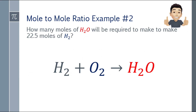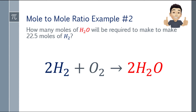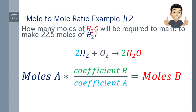Example 2: how many moles of water will be required to make 22.5 moles of H2? We have the equation H2 + O2 = H2O. Check if it's balanced — it is not, so we balance it: 2H2 + O2 = 2H2O. I'll write the formula again and highlight the coefficients.